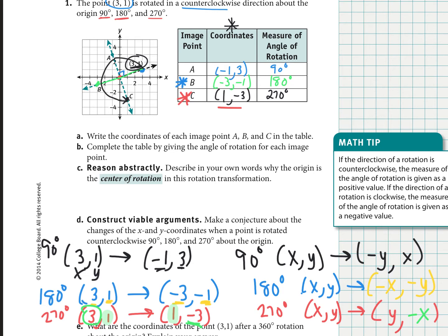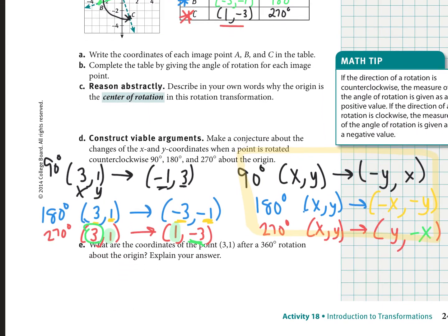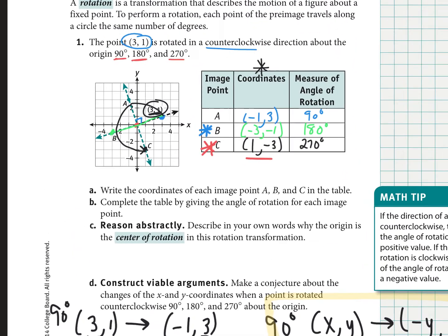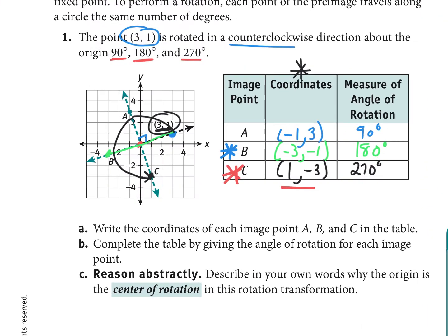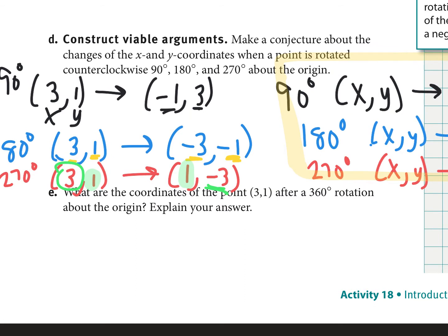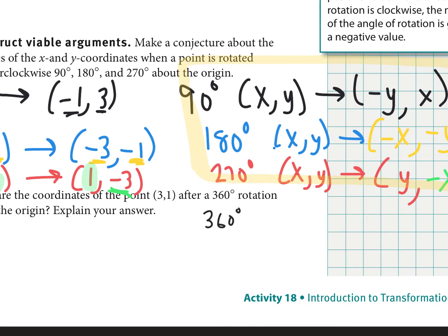Keep these rules handy so you can apply them — it'll make this whole section a lot easier. One last question: what about point (3, 1) after a 360-degree rotation? Going 90, 180, 270, and then another 90 gets you right back where you started. So the rule for a 360-degree rotation is: any point (x, y) just ends up back at (x, y).